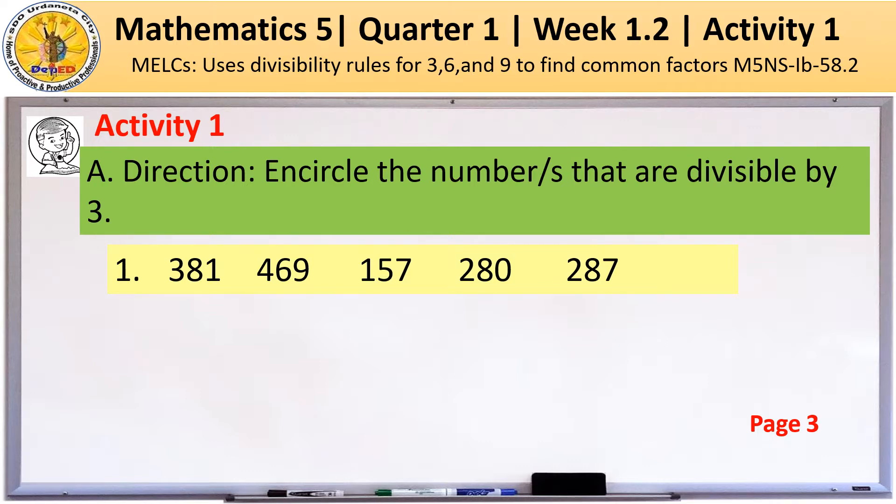Let's try number 1. Among the 5 given set of numbers, we're going to encircle the number that is divisible by 3. The correct answer is 381.